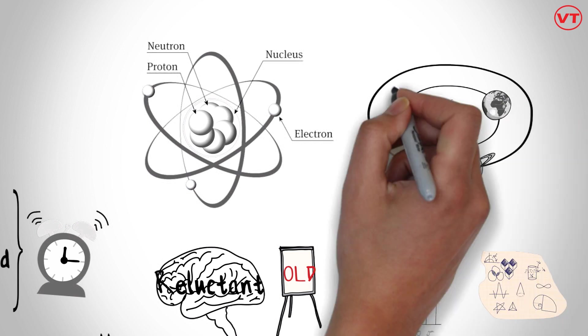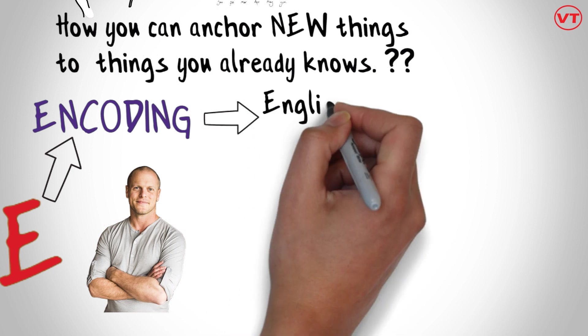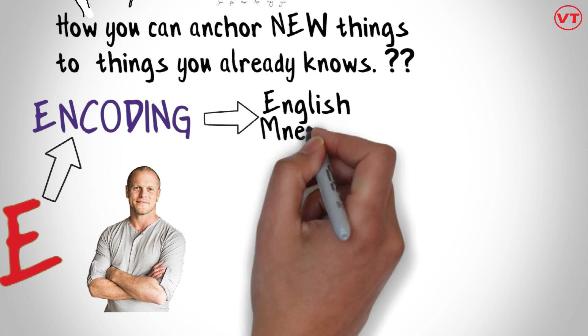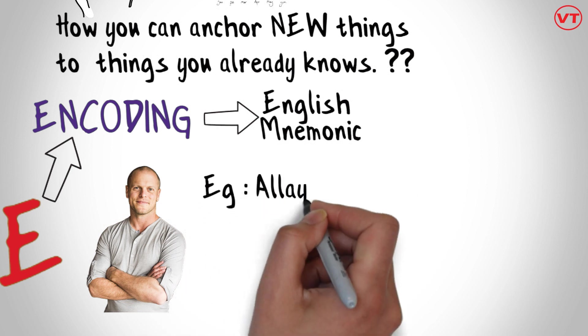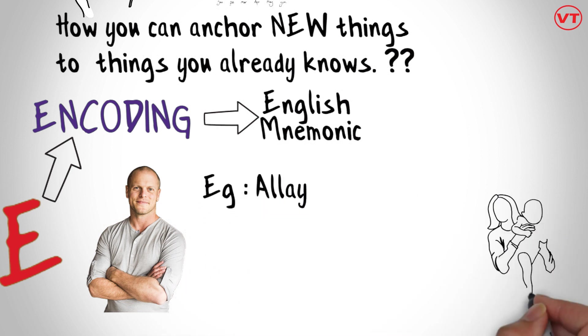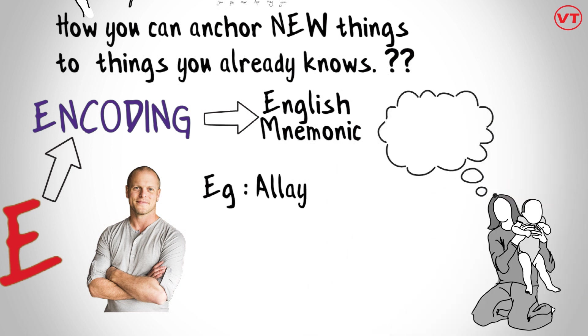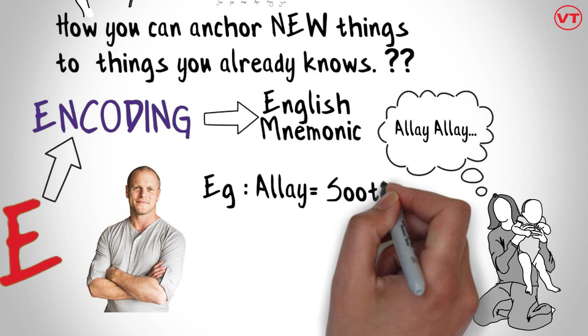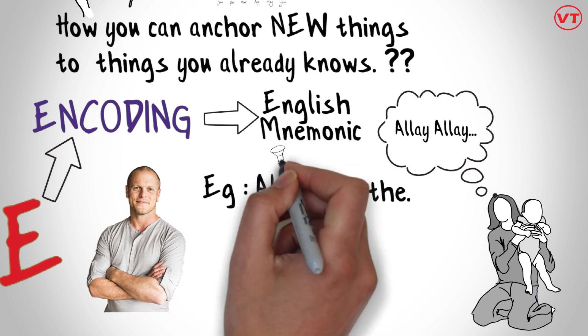In English the same technique is used in learning vocab or new English words called mnemonics. It is a form of encoding. For example, the English word allay: I will remember the meaning of this word like this - when any baby will cry, his or her parents start saying allay allay allay, don't cry, to soothe that child or to stop crying of the child. And this way the dictionary meaning of allay, that is to soothe somebody, can be encoded and anchored.